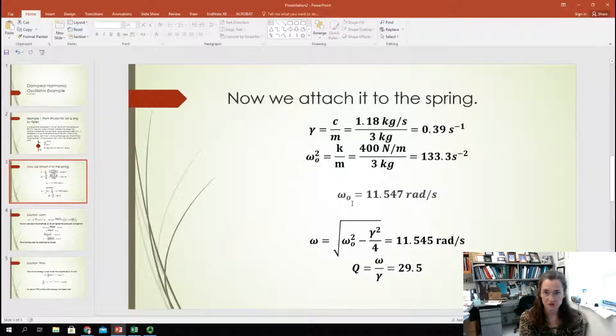So, if I solve for the natural frequency of this mass on a spring, I would get omega_naught is equal to the square root of 400 newtons per meter divided by 3 kilograms, which gives me a natural resonant frequency of 11.547 radians per second.